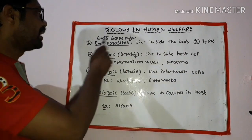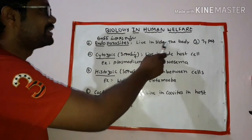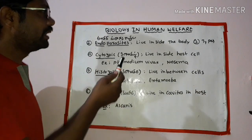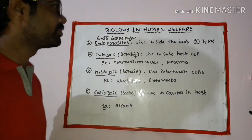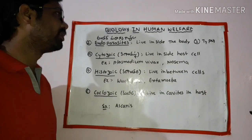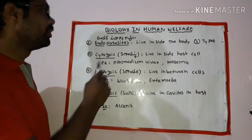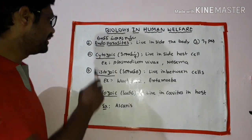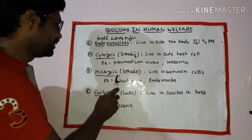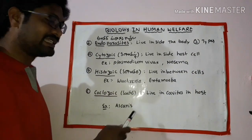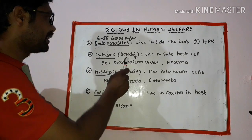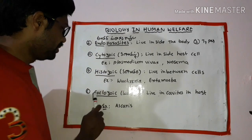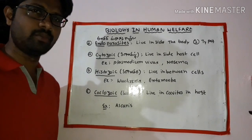The second type is endoparasites, which live inside the host body. Endoparasites are of three types: cytozoic, histozoic, and celozoic.